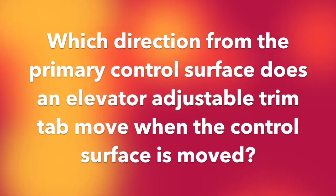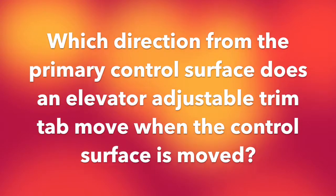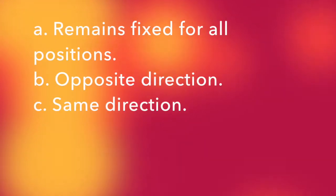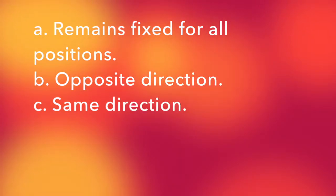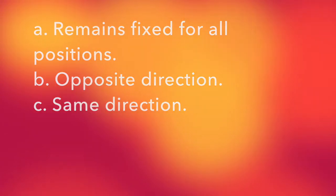Which direction from the primary control surface does an elevator adjustable trim tab move when the control surface is moved? A: remains fixed for all positions. B: opposite direction. C: same direction.